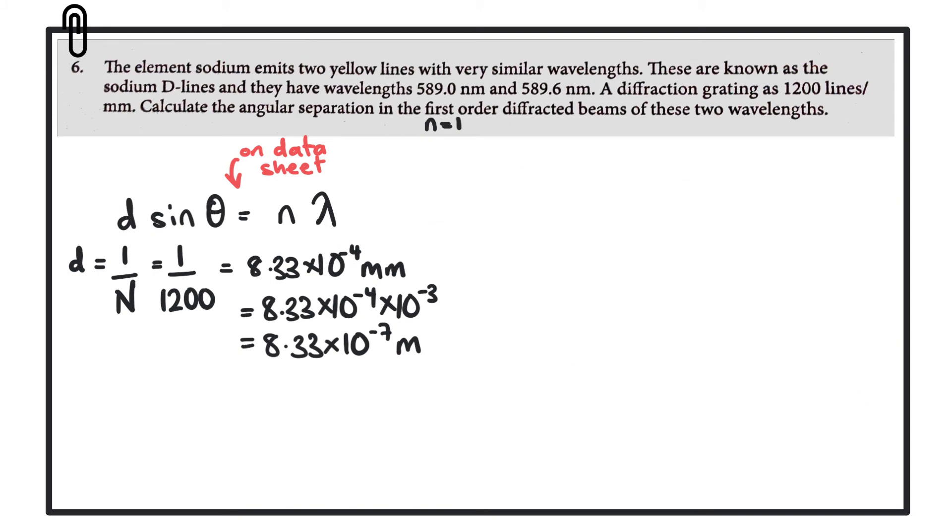Now that we know what d is, we know what the order is because it's the first order so n is equal to 1, and we know the wavelengths involved. We can now begin to work out theta for each of the wavelengths. We'll start with the 589 nanometers.